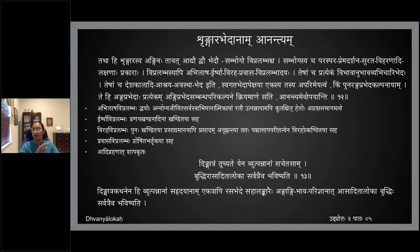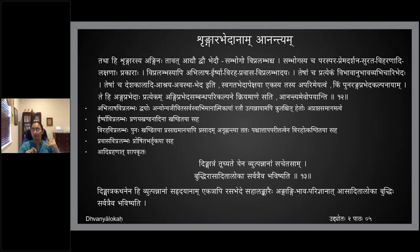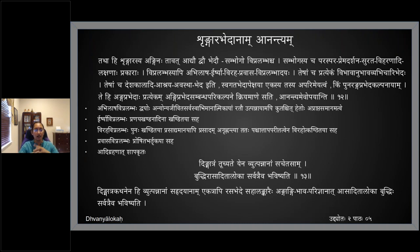Because of some reason when they both could not get together — that is called abhilasha vipralambha. They both like each other, they both are very much involved with each other, but they are not able to come together — that is abhilasha vipralambha. Irshya vipralambha — pranaya khanda nadina — khandita nika is relevant here.